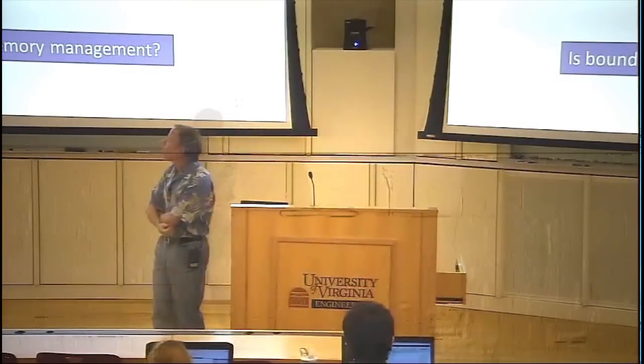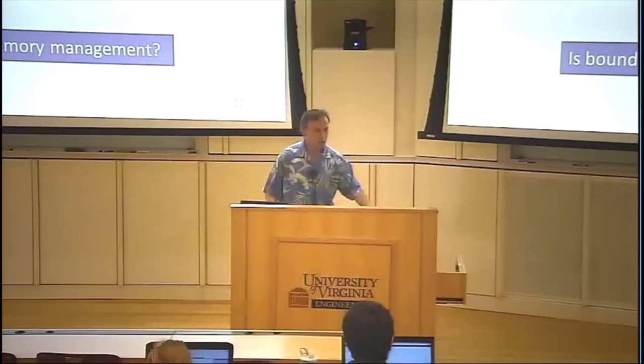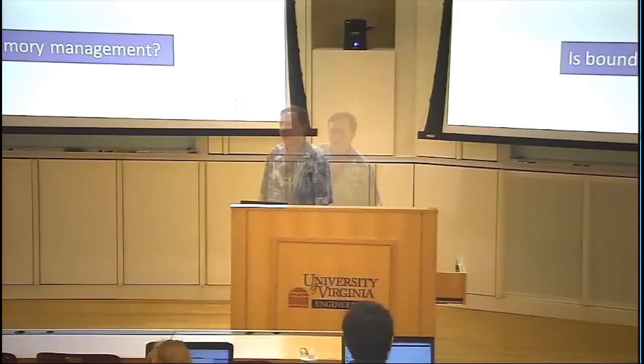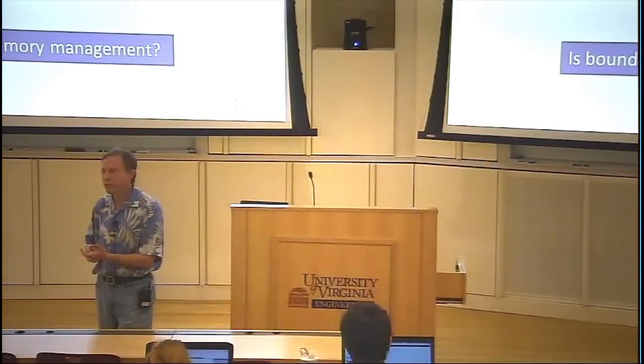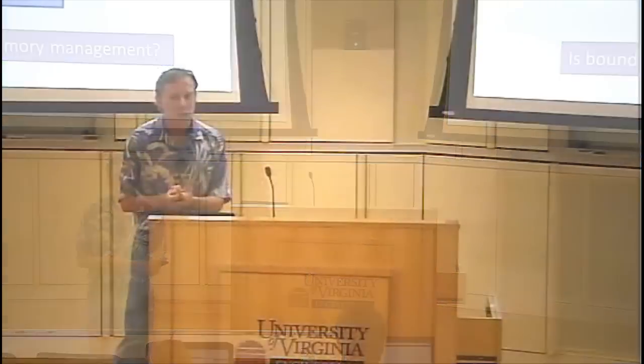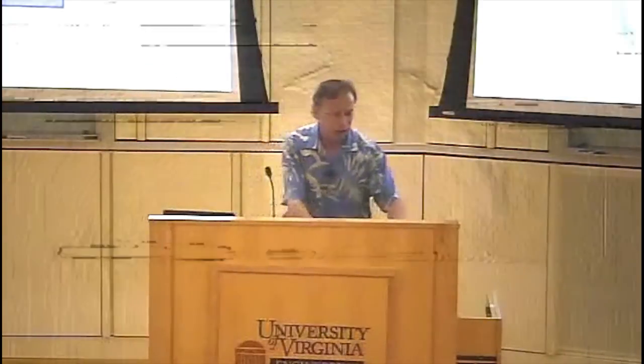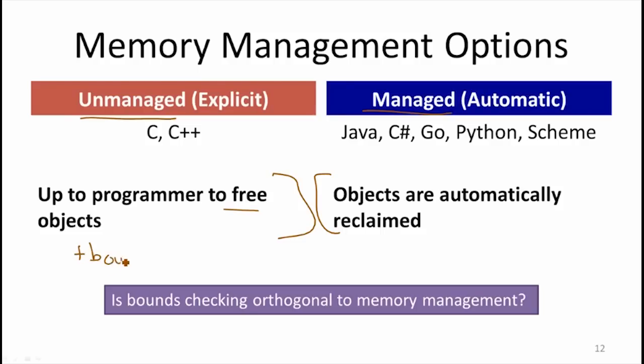Could you have a language that is unmanaged, where you explicitly have to free objects, but every index into an object is bounds checked? Is there any reason you couldn't add bounds checking to C? Could you implement your own data type in C that behaves like an array but checks if references are in bounds? Sure — you just add code that keeps track of the size of the object and checks when you index it. So the C compiler could certainly do that, and you could certainly add bounds checking to an unmanaged language.